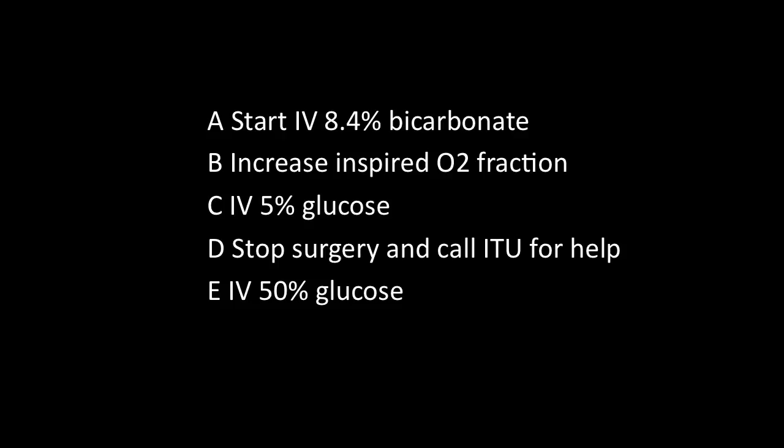So you may have been tricked into doing something else like giving bicarbonate for metabolic acidosis, something we don't really do now. The correct answer is to give IV 50% glucose. 5% glucose doesn't have enough glucose in it — it only has a tenth of the amount that 50% has. So if you're giving IV treatment for hypoglycemia, you need to give 50% glucose, 20 or 30 mils to start with, and remeasure straight away.